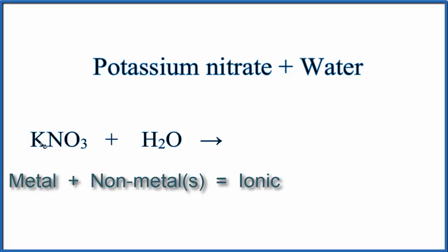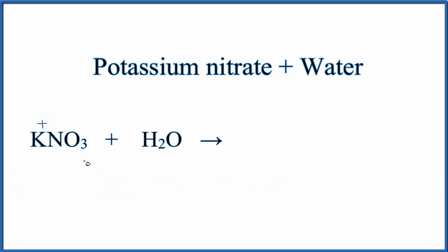Looking at the periodic table, potassium is in group 1, so it has a charge of plus 1. And then NO3, the nitrate ion, which we can look up on a table of polyatomic ions, NO3 is always a minus 1 charge. So the plus and the minus, those are attracted, and that's what forms this ionic bond here.